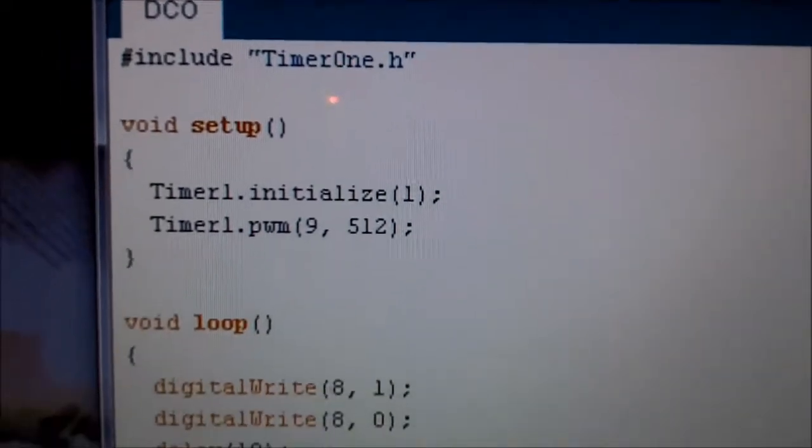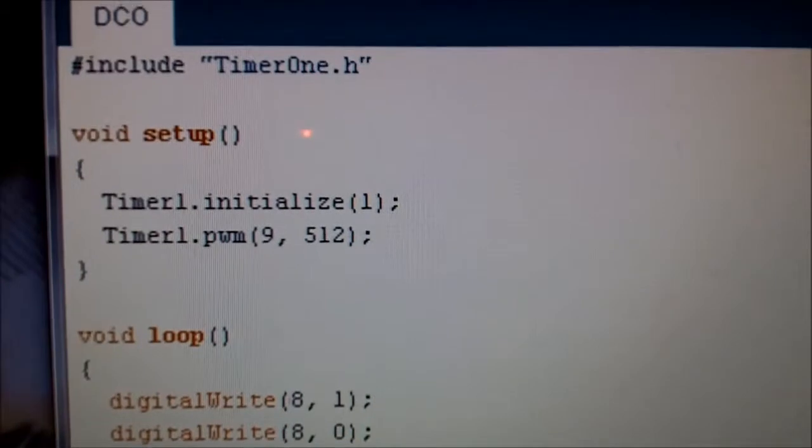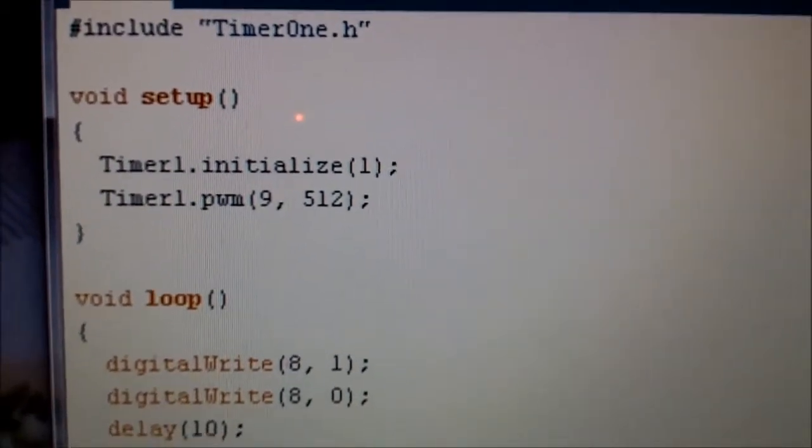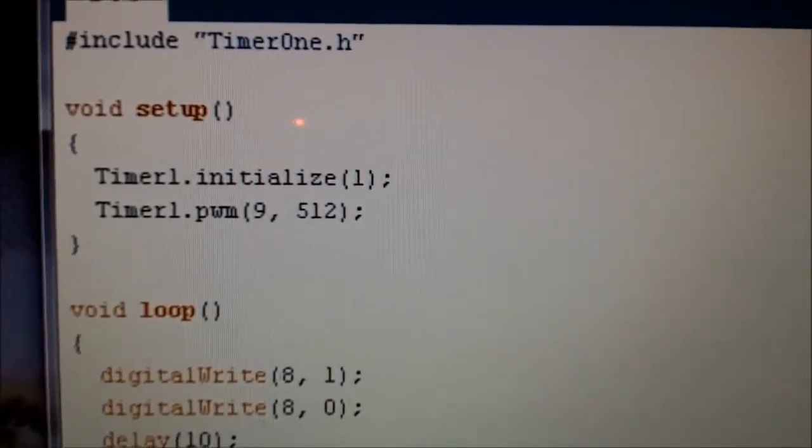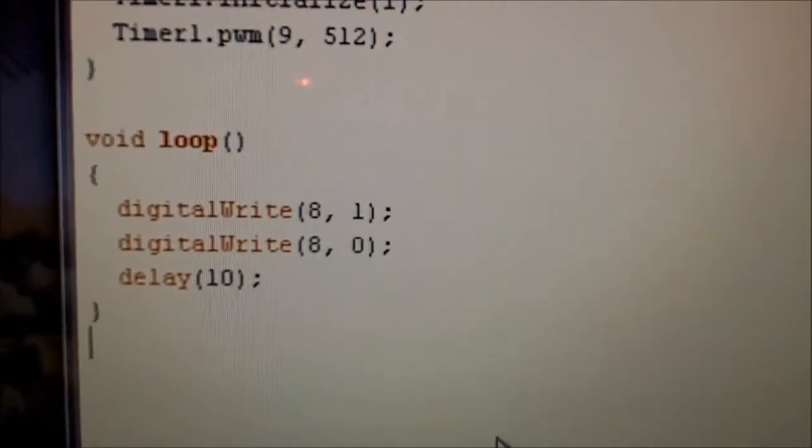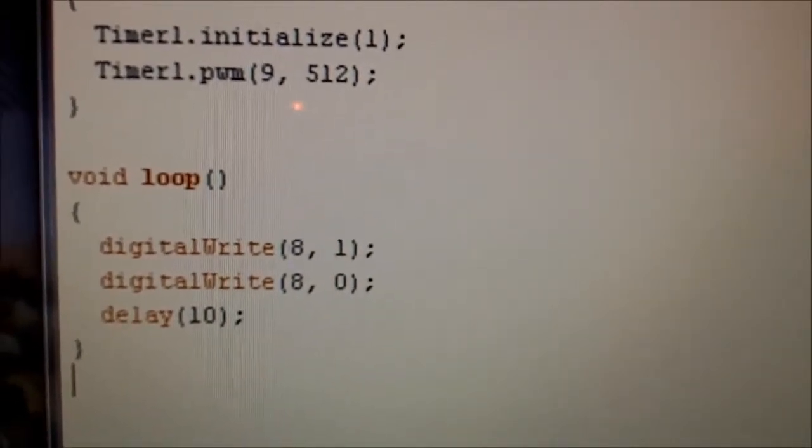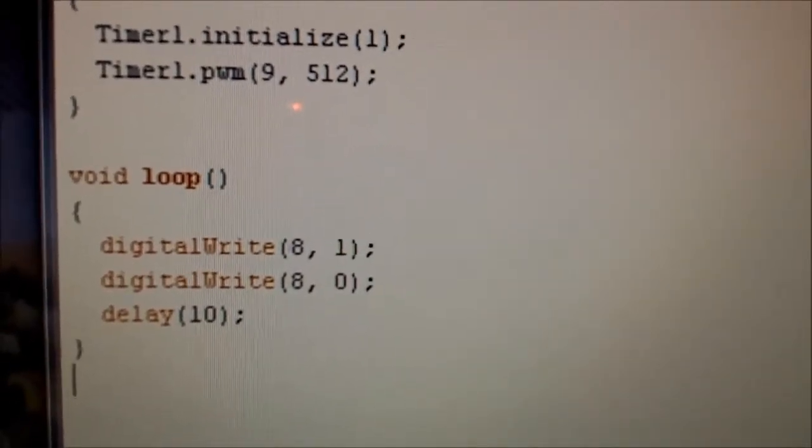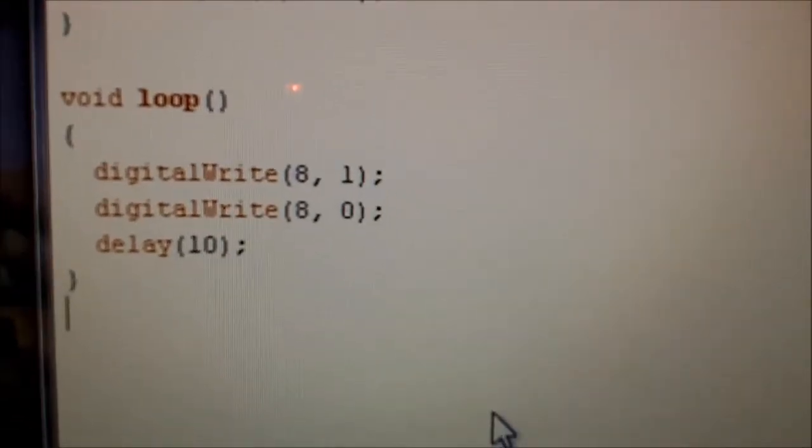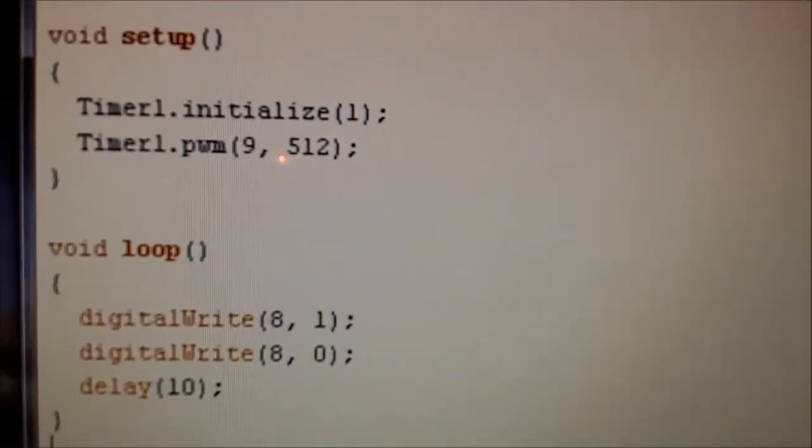And here's my code right here. Timer 1 initializes set to 1, so that just basically sets the PWM to a very high frequency, and I have it set to half the duty cycle. And down here is where I'm doing the reset pulse for each wave. I'm basically just setting a digital write to pin 8, 1 and then back to 0, and then delaying 10 milliseconds. So let's go ahead and take a look at this on the scope.